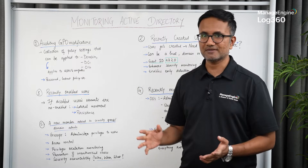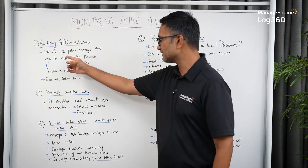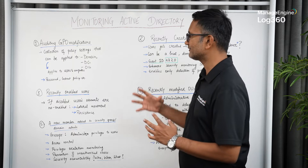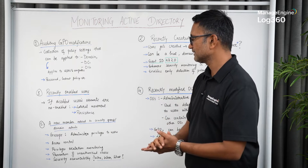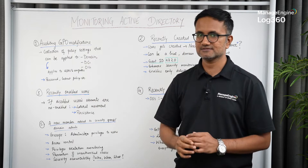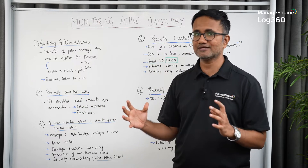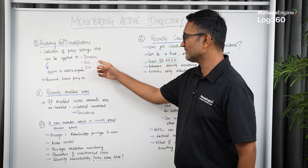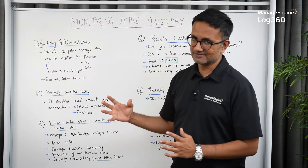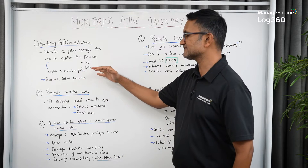What is a GPO? A GPO is a Group Policy Object, and as you can see here, it's a collection of policy settings. A lot of policy settings come together to create what is called a Group Policy Object. That's important because those policy settings can be applied to domains, domain controllers, and OUs, and the users and computers that are part of those domains, DCs, and OUs are also going to be affected.